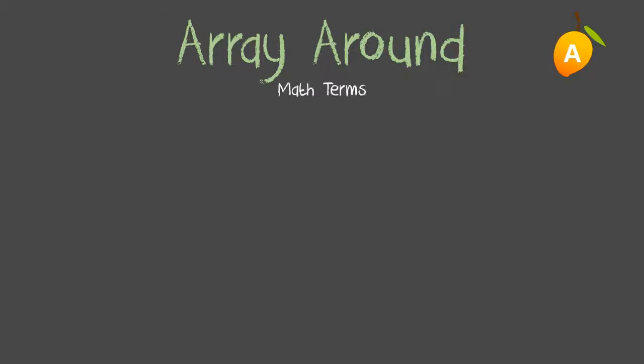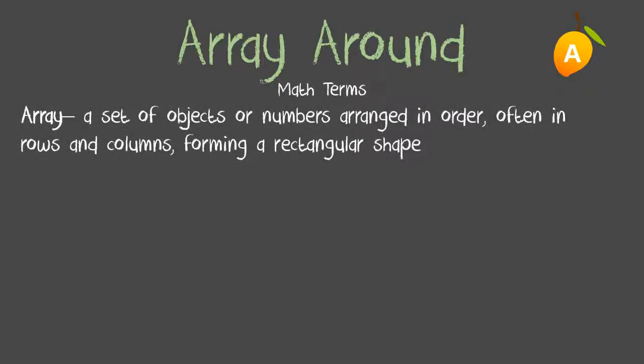Array Around has some math terms to increase understanding. Array: a set of objects or numbers arranged in order, often in rows and columns, forming a rectangular shape.